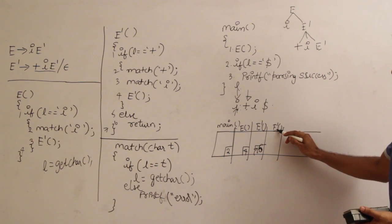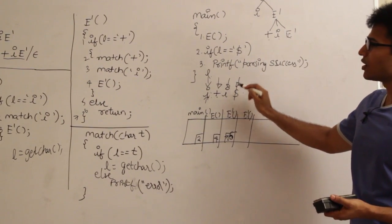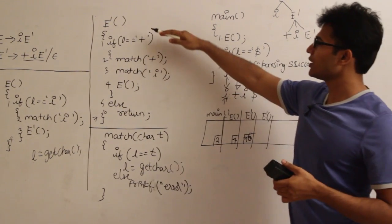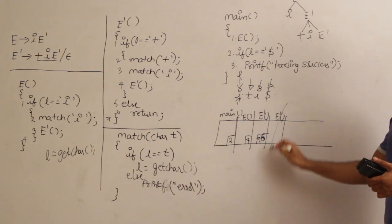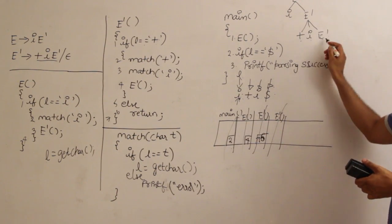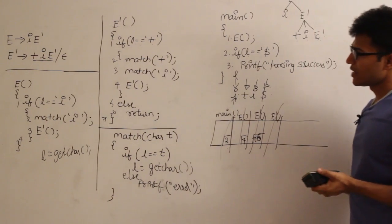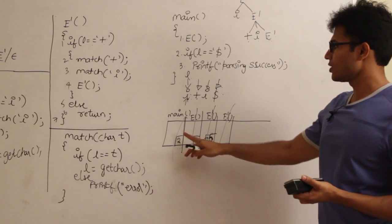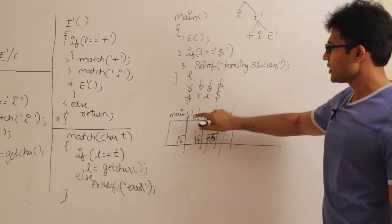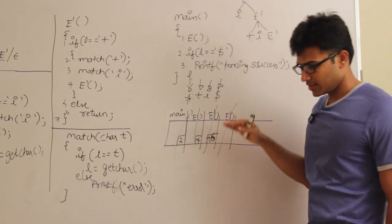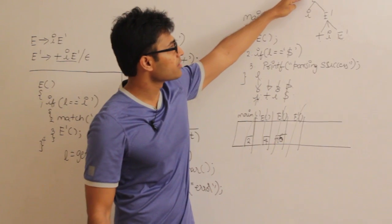Now in the next call to E dash, the lookahead is dollar. Is lookahead equal to plus? No. So it goes to the else part and simply returns. Everything unwinds and returns. Finally in main, lookahead equals dollar and parsing is successful. We wrote functions for every variable and called them using the operating system's recursion stack, mimicking parse tree construction. This is why recursive descent parser is a top down parser.